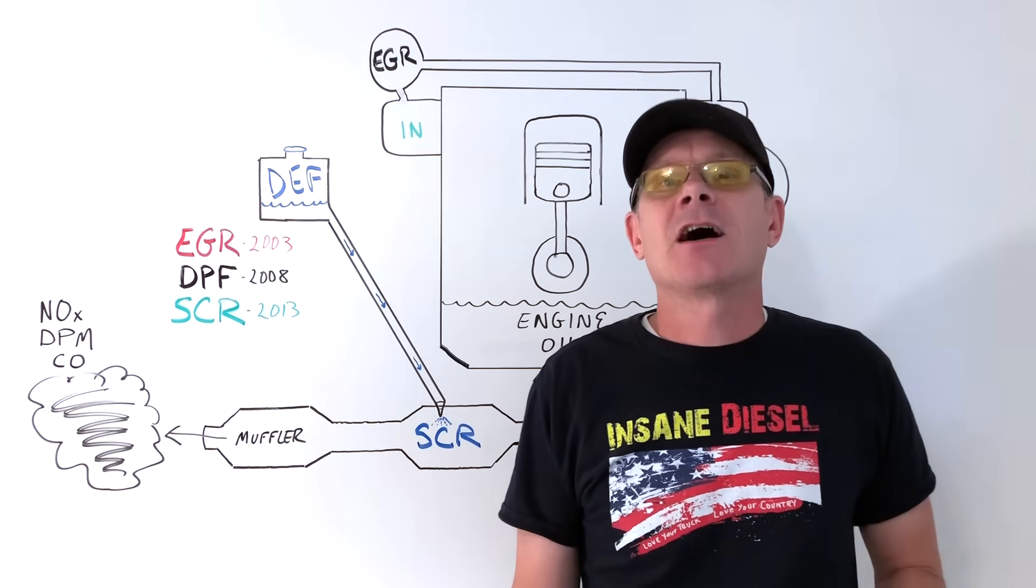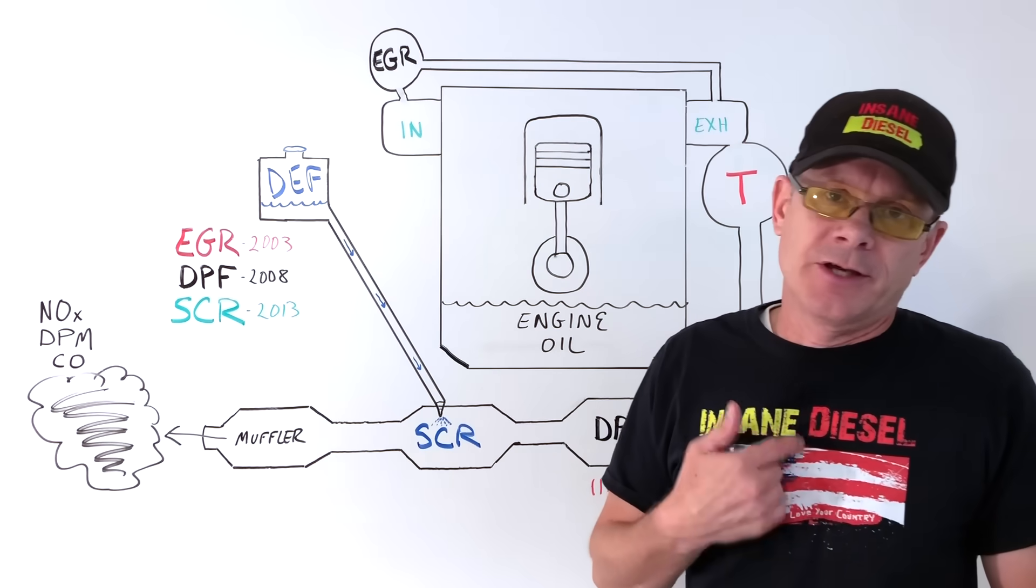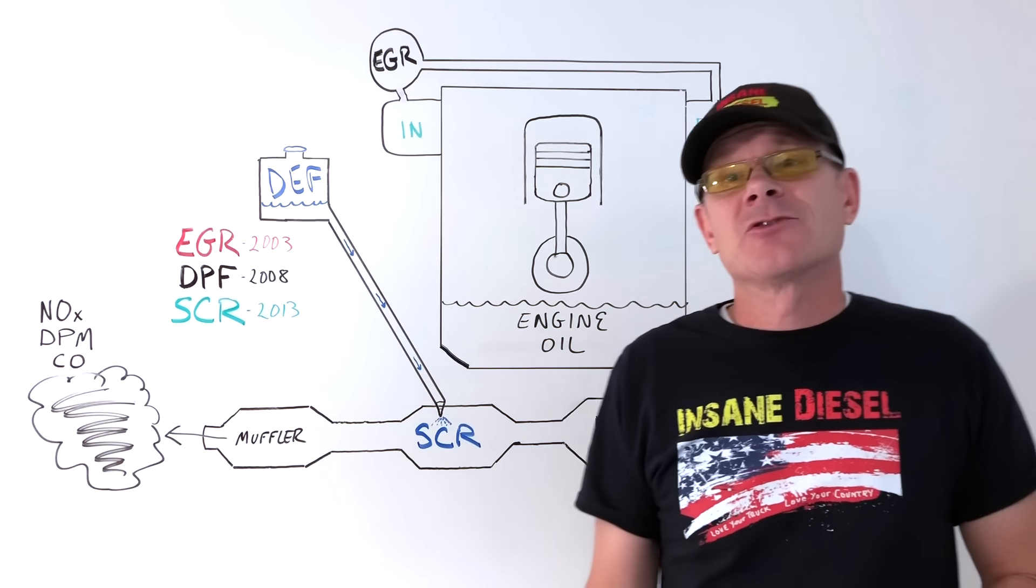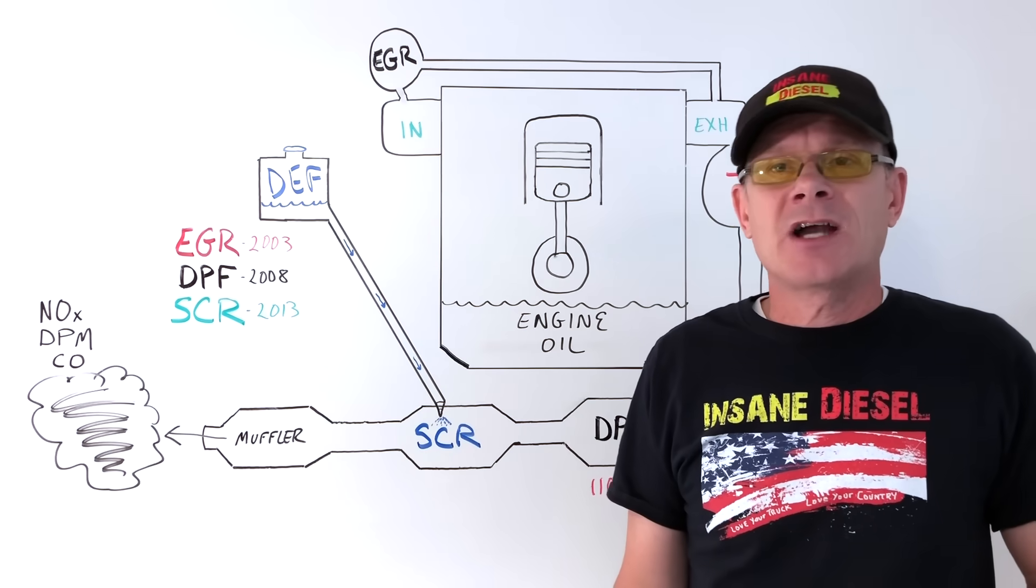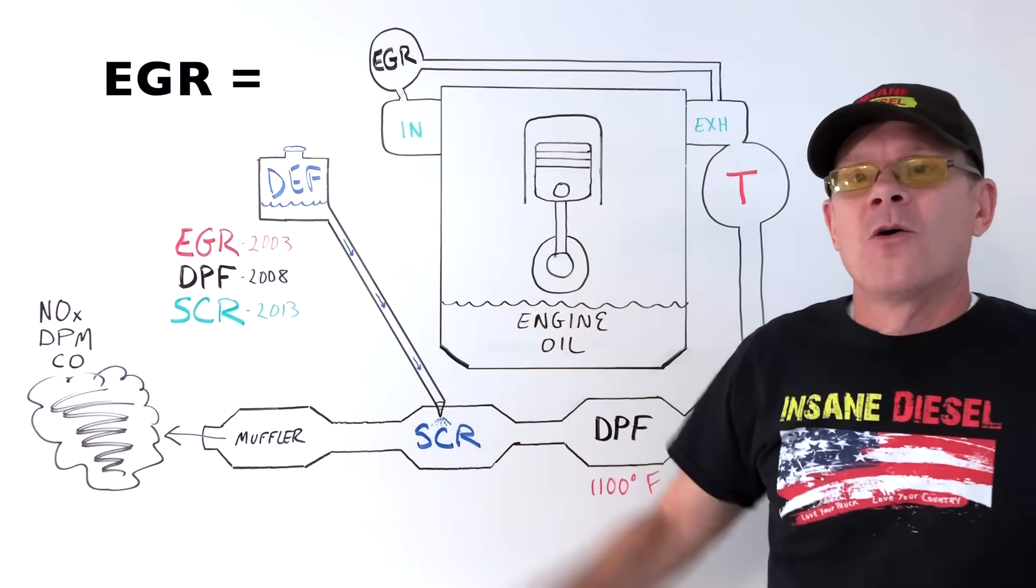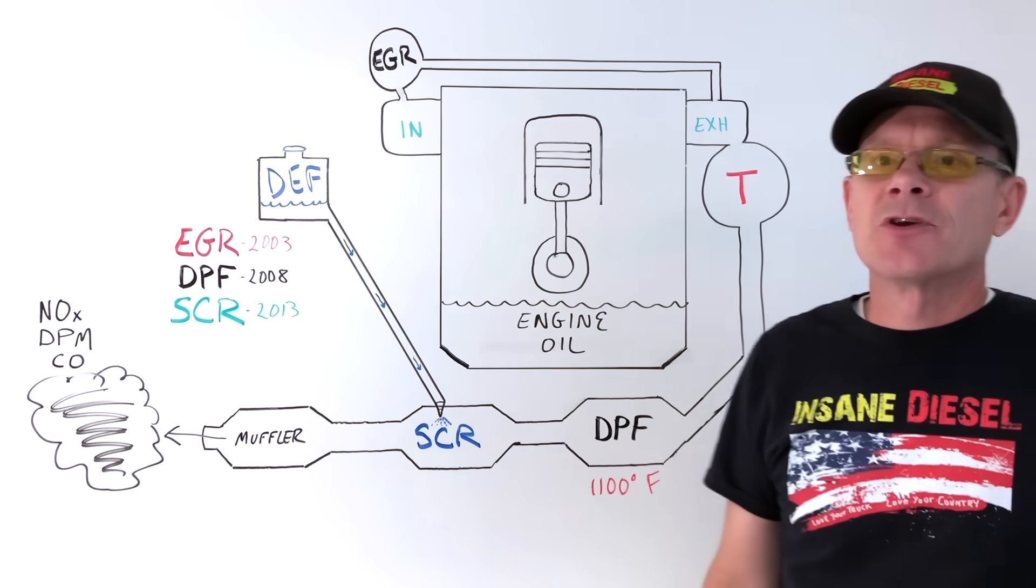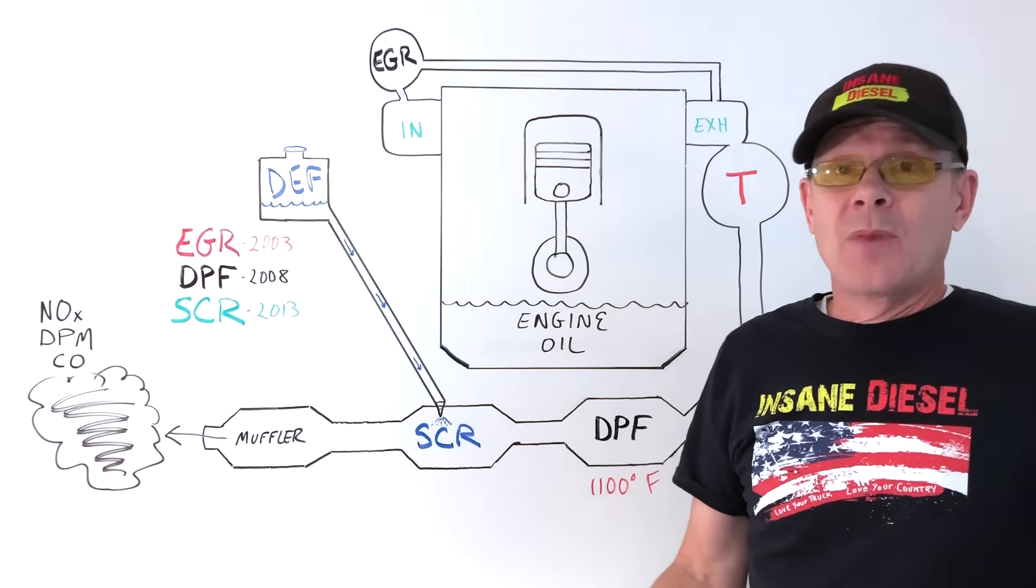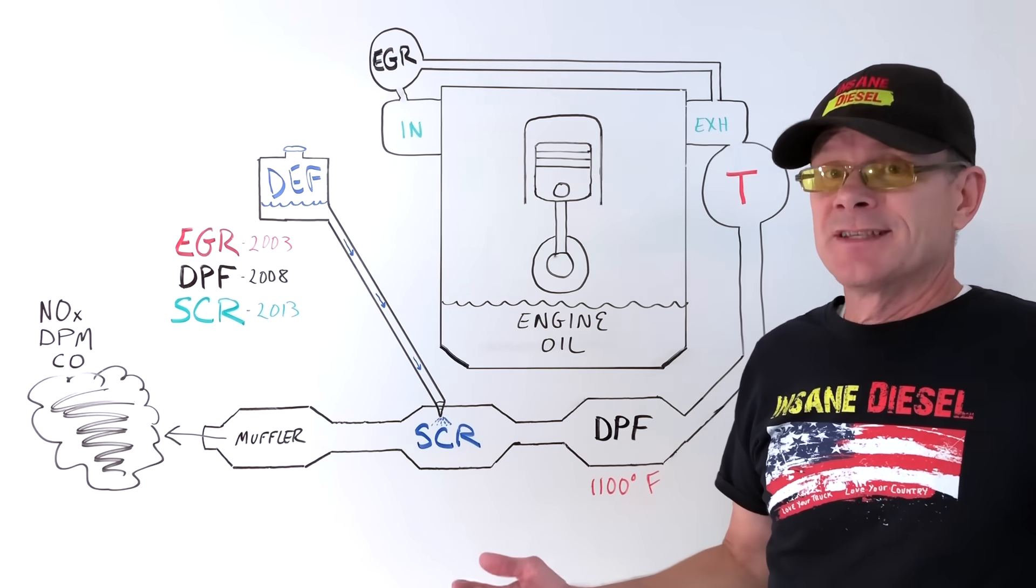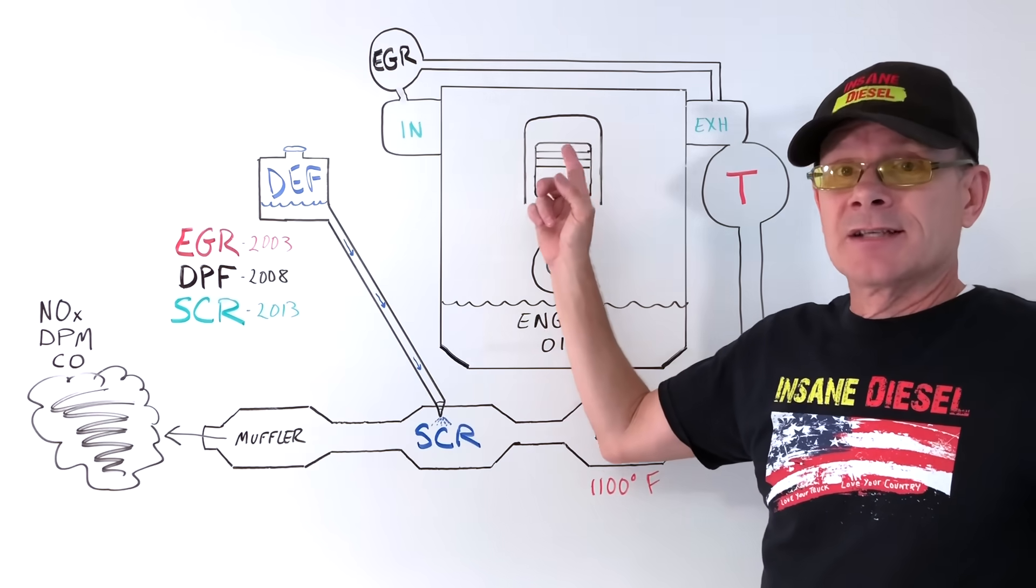Nitric oxides are toxic gases and are believed to promote smog, acid rain, and complications for the human respiratory system. In 2003, diesel manufacturers were required to implement nitric oxide emissions controls and did so via an EGR, or exhaust gas recirculation system. Nitric oxides are produced in high numbers because it is the byproduct of a healthy, efficient, hot engine combustion system. So, the hotter the combustion, the more nitric oxides are produced.